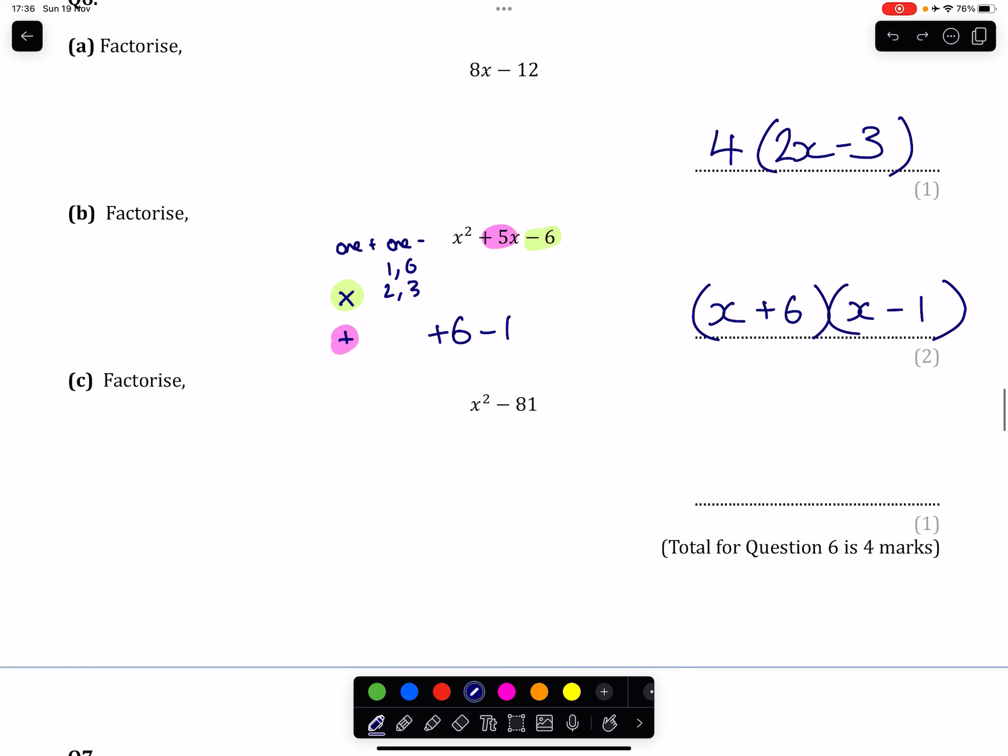Part C. x squared and 81 have nothing in common, so we're not going to have a single pair of brackets here, meaning that if we're being asked to factorize, it should go into double brackets.